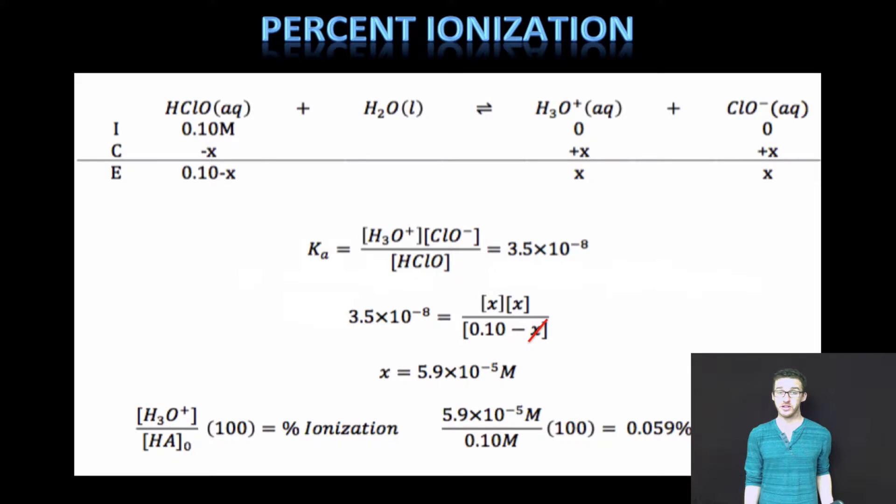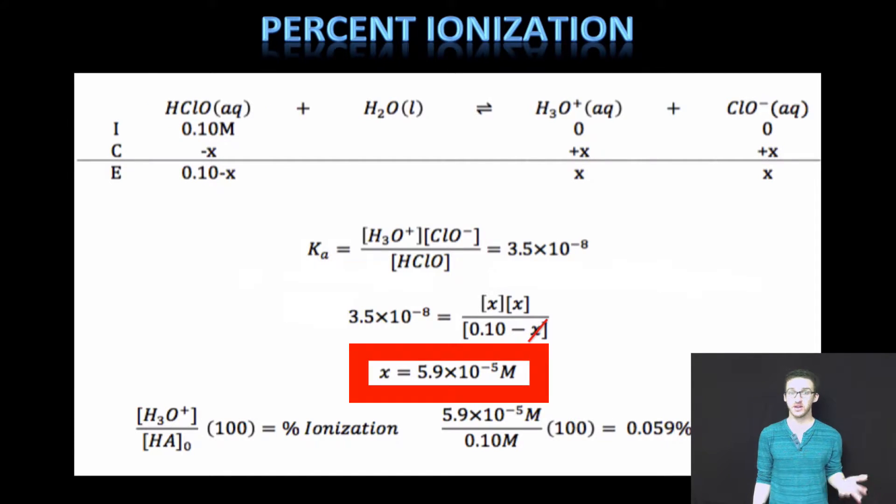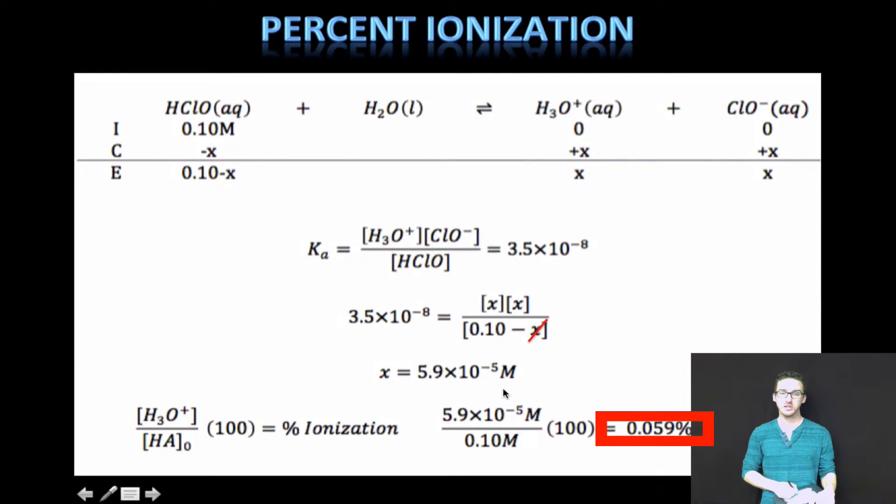And you've got this example in your notes, but take a look at hypochlorous acid, HClO. Imagine that we had a 0.1 molar solution. On your screen, you're shown how to come up with the concentration of the hydronium ion. And then the percent ionization is determined by simply taking that concentration of hydronium ion, comparing it to the initial concentration of the weak acid, and then multiplying by 100 to get the percent ionization.